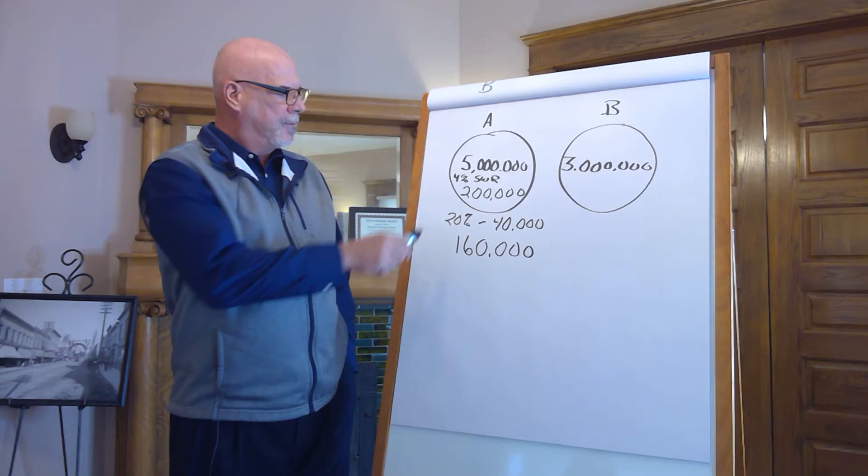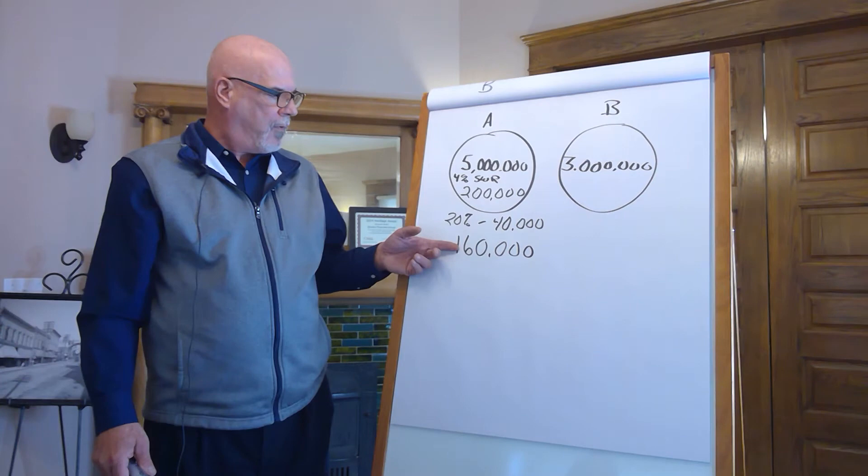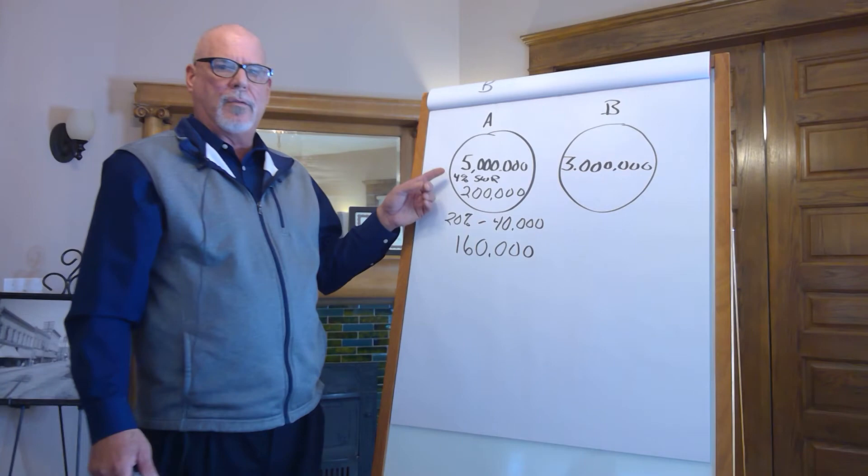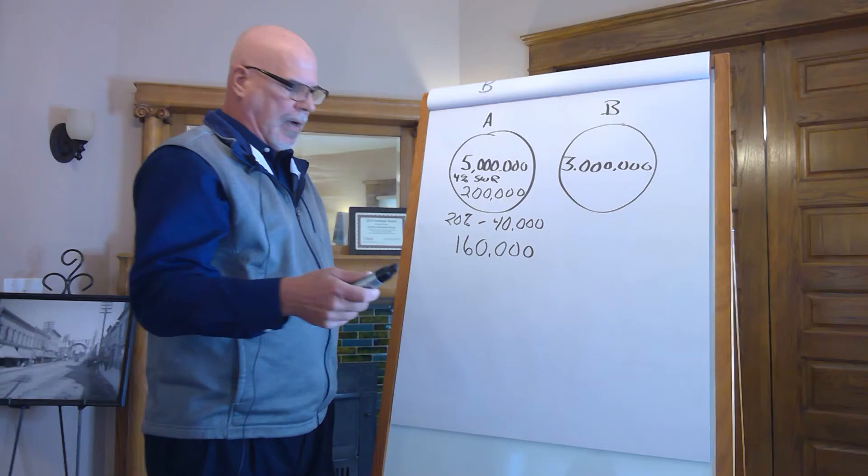Now, what if tax rates go to 25%? That goes to $150,000. What if tax rates go to 30%? This goes to $140,000. The point is, you built an account here that you cannot calculate the debt that you owe to the government. You're going to pay it when they tell you when and how much.